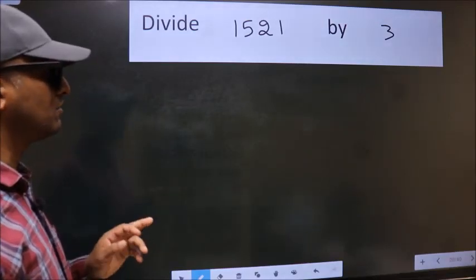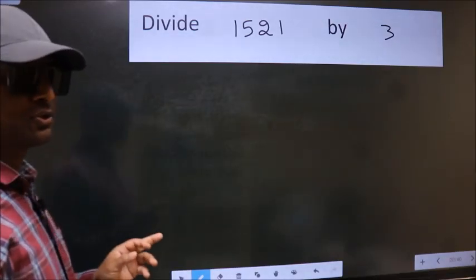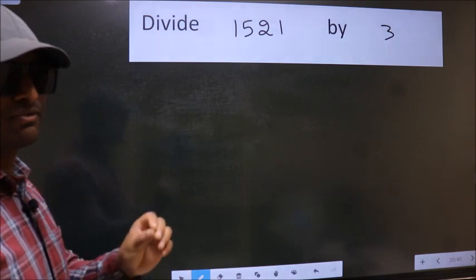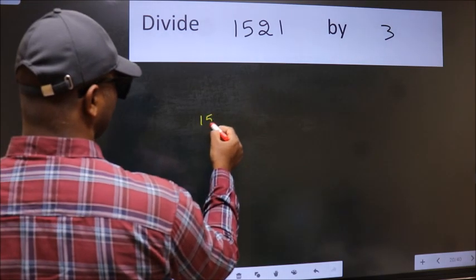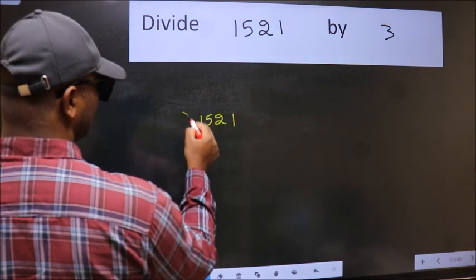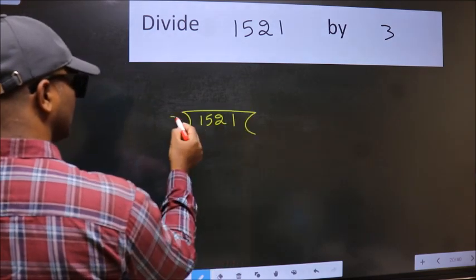Divide 1521 by 3. To do this division, we should frame it in this way: 1521 here, 3 here.